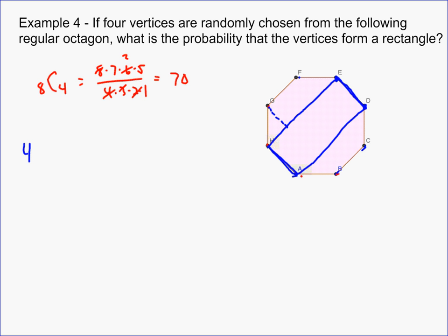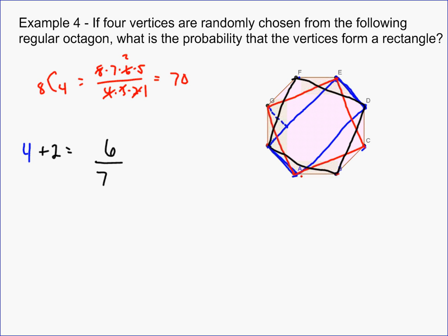There's another rectangle you might not notice right away — it's actually a square, formed by connecting every other vertex of the octagon. You can prove it is a rectangle in a regular octagon. There are only two of these squares. So the total positive outcomes are 4 plus 2 equals 6 rectangles, out of 70 total groups of four, giving a final probability of 6 over 70, which simplifies to 3 over 35.